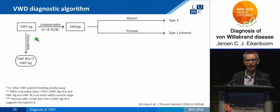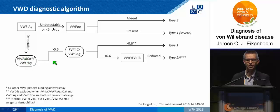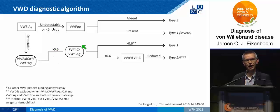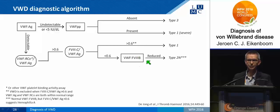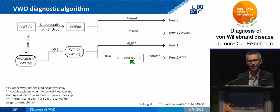If the antigen is well detectable, we judge it in combination with the ristocetin cofactor activity. If the ratio of activity over antigen is well above 0.6, the activity and antigen are more or less in line. We then assess factor 8 over antigen ratio — if above 0.6, they are in line and it is a type 1. But if the factor 8 over antigen ratio is low — below 0.6 — it could be a binding defect or type 2N fulvirate disease, and you need to include the binding assay. If the binding assay shows reduced binding of factor 8 to fulvirate factor, it is a type 2N. If the binding assay is normal, you should consider mild hemophilia.